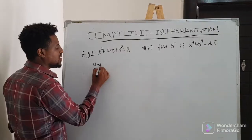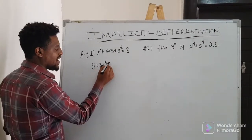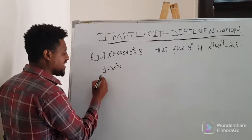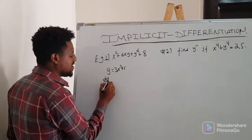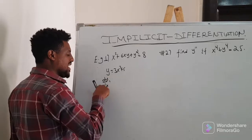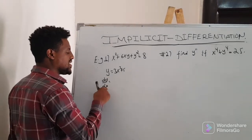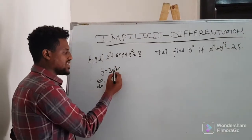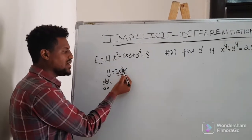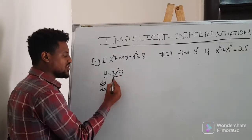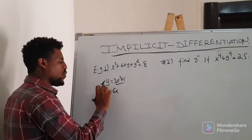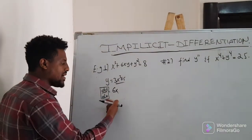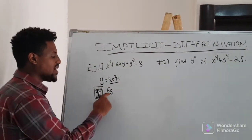For example, y is equal to 3x squared plus 5. The derivative with respect to x — the derivative of 3x squared is 6x. So dy by dx is equal to 6x.